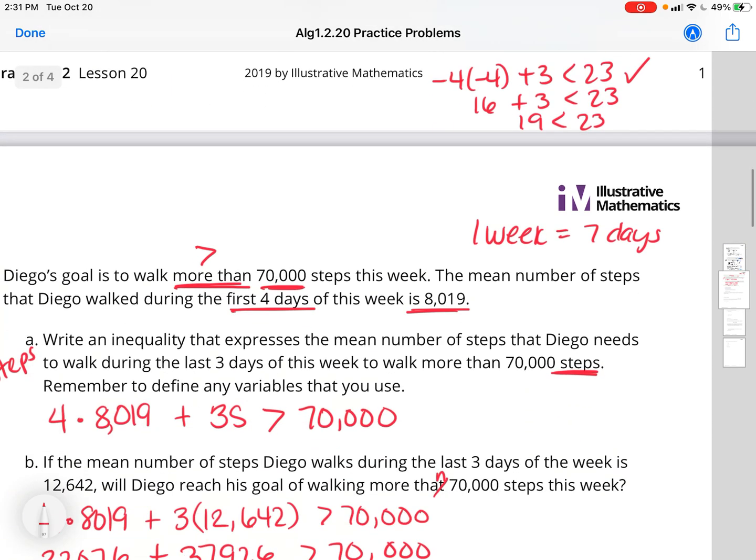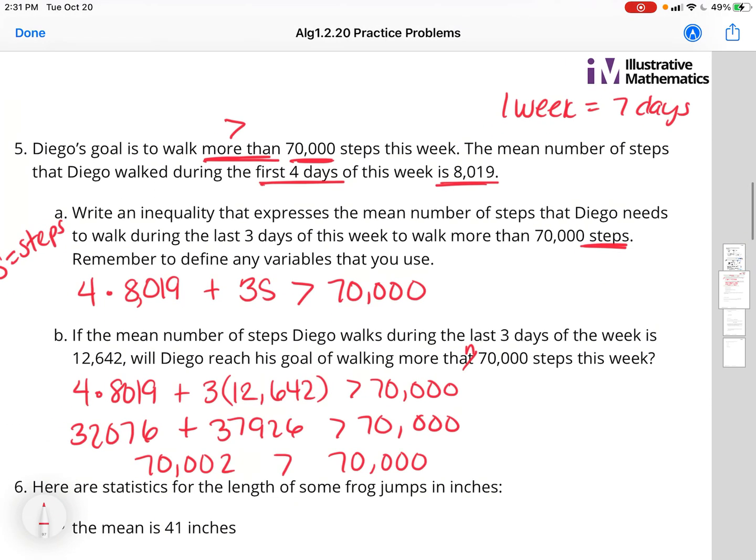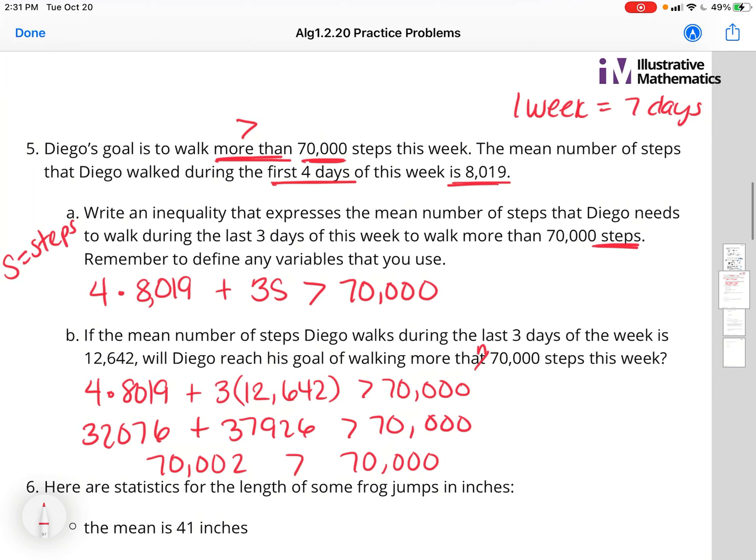Let's just do one more. If you want to continue walking through these practice problems on your own, you can. But I'm just going to walk through number 5. This is talking about Diego. He wants to walk more than 70,000 steps this week. So I labeled that with the greater than. More than means greater than. A week is 7 days. The mean number of steps that Diego walked during the first 4 days of this week is 8,019. So he walked an average of 8,019 steps per day.